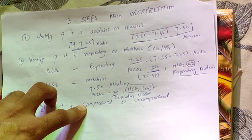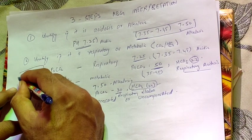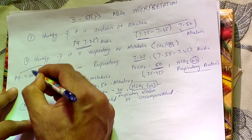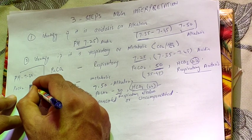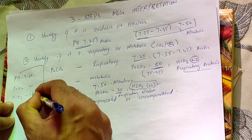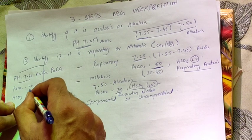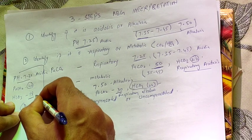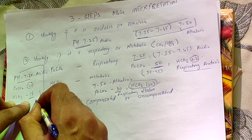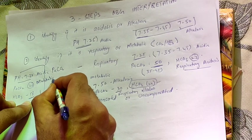Now another example: pH is 7.30, pCO2 is 40 (within normal limits), and HCO3 is 18. You've decided it is acidic. pCO2 is normal, so no respiratory cause. Bicarbonate's normal value is 22 to 26, but here it is 18 — below normal. Since bicarbonate is a basic substance and it is low, we can consider this metabolic acidosis.